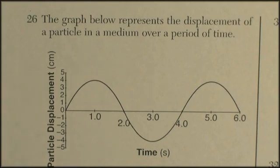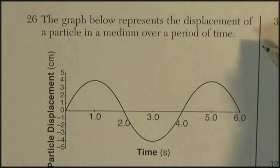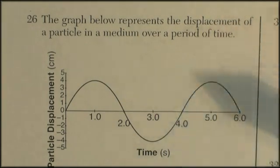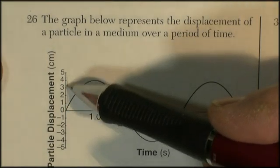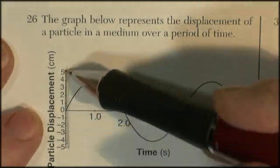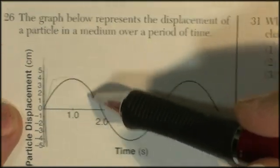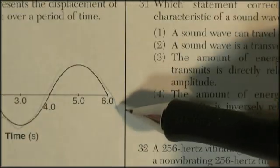This is the June 2011 exam, we're on page 6. The graph below represents the displacement of a particle in a medium over a period of time. So we've got some medium that's going up and down, and over time if you were to graph it, it would look like that.